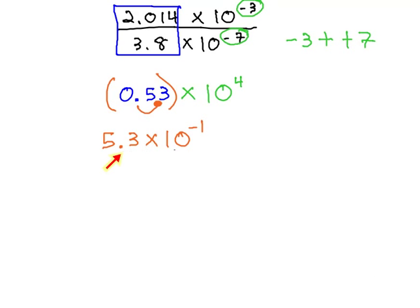This means the 5.3 is technically divided by 10, which would give us the 0.53.